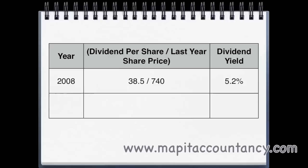Moving on to year 2009: the dividend was 40 cents and the closing share price from 2008 was $8.35. So 40 cents over 835 gives us 4.8%. Nothing difficult there — just make sure you use this year's dividend and last year's share price, because we needed to invest at the end of last year to get the dividend for this year.